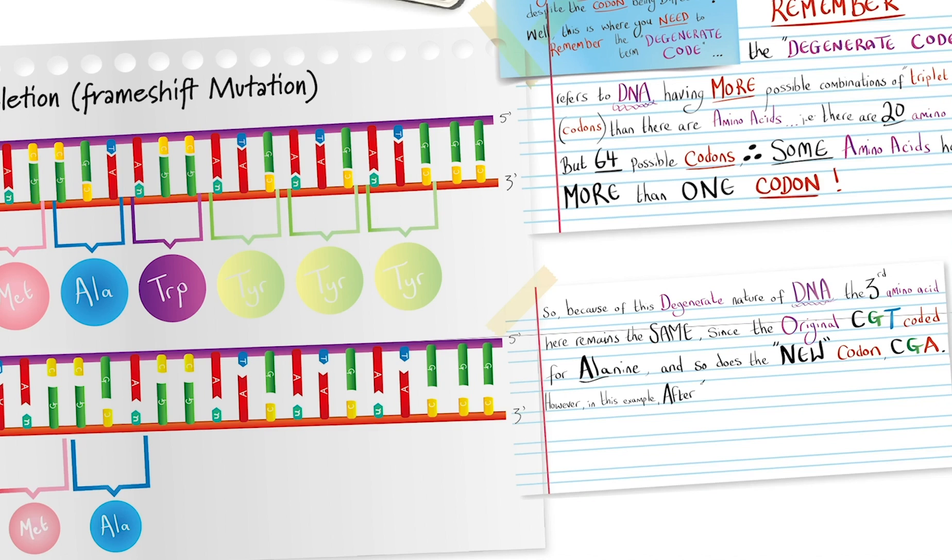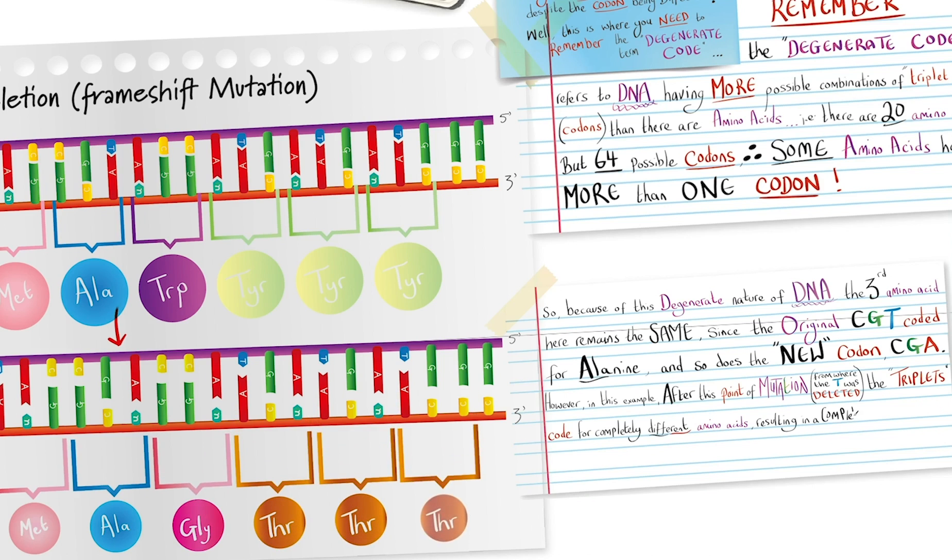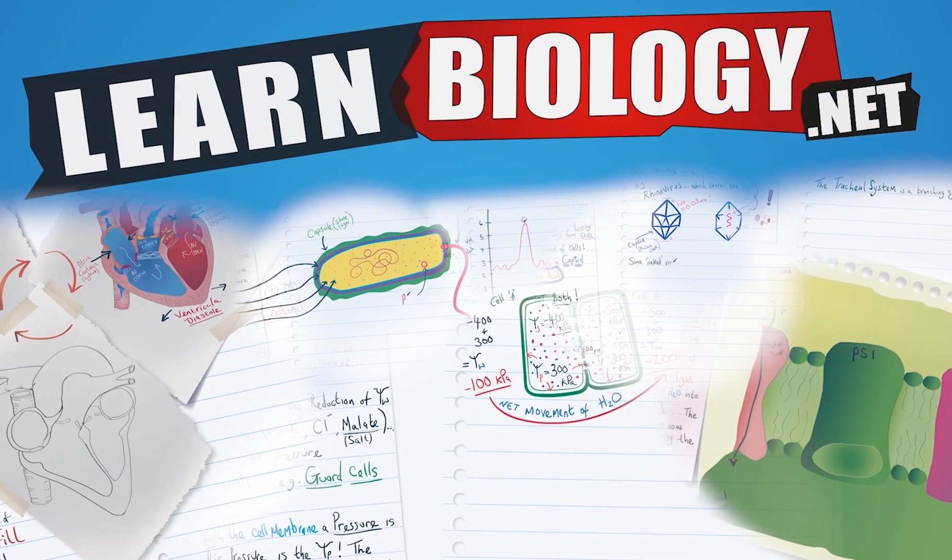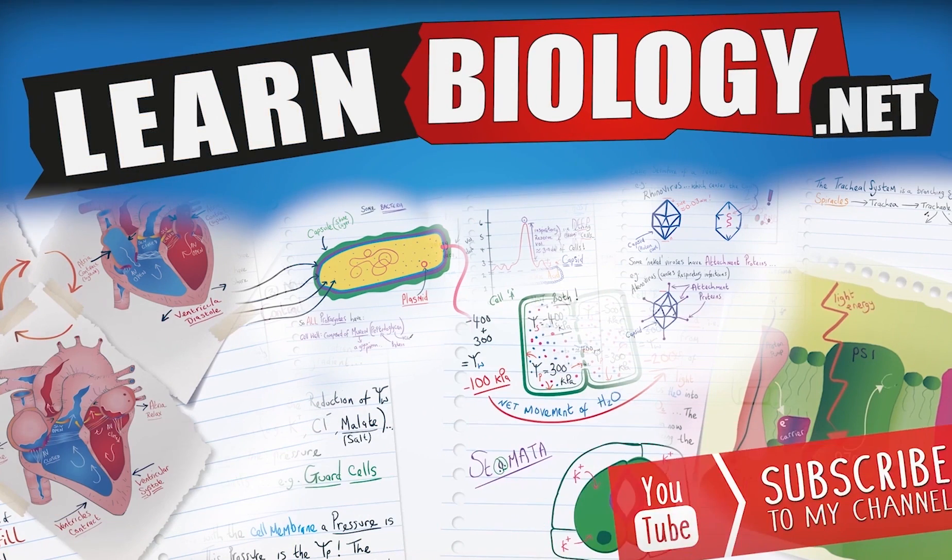However, in this example, after this point of mutation, from where the thiamine was deleted, the triplets code for completely different amino acids, resulting in a completely different, and for the sake of this example, we'll say non-functional polypeptide.